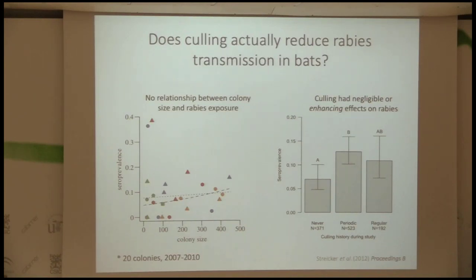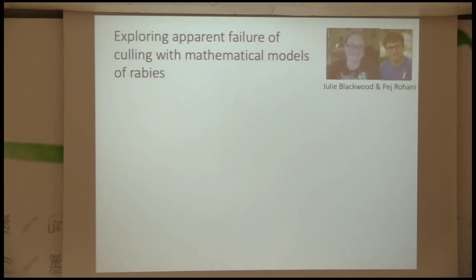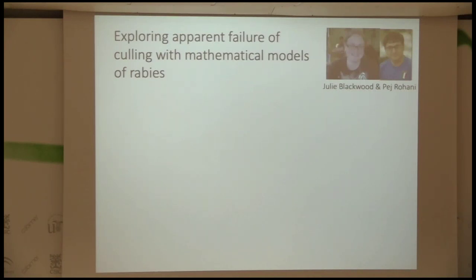When we compared colonies that had never been culled, periodically culled, or regularly culled during the course of this initial four-year study, we saw that culling either had no effect at all, or might even in some cases be increasing the amount of rabies transmission. This was the first indication that culling might not only be ineffective but could potentially be counterproductive.